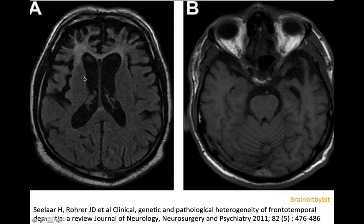On the left side there is a FLAIR image of a patient with marked frontal atrophy and also gliosis in the white matter, which is consistent with behavioral variant frontotemporal dementia with behavioral problems. Pick's disease is also included in this image.